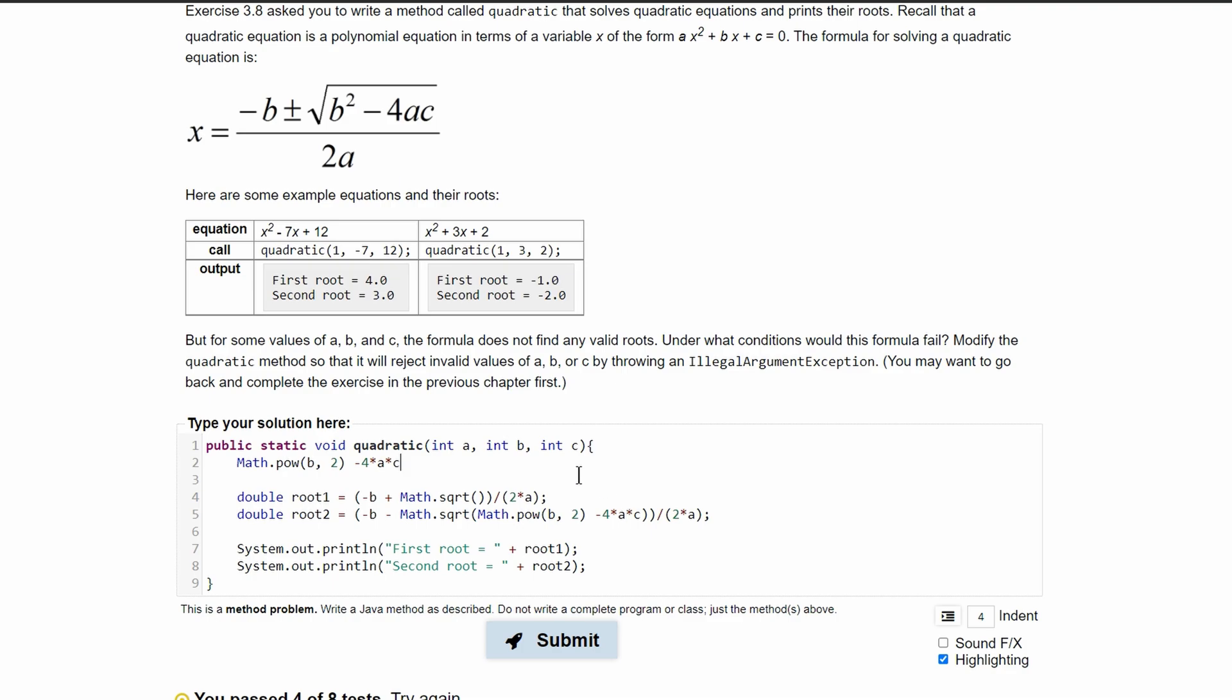We can cut this and paste it before any of this. We're going to do all of this and then store it into a double and then check if it's negative or not. If it's negative, then we know we have to throw an illegal argument exception before we plug it into our square root.